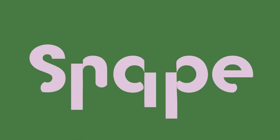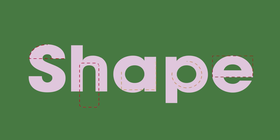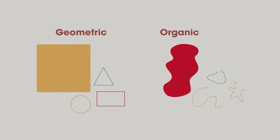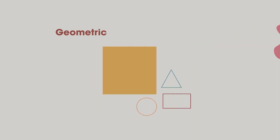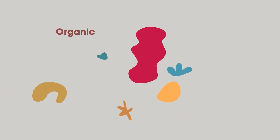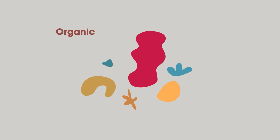Now, let's look at shape and its connection to line. Shapes are two-dimensional structures enclosed by lines. They have height and width. They can be geometric or organic. Geometric shapes like squares and triangles are mathematically regular — they are constructed using lines, angles and points. Organic or biomorphic shapes are irregular structures that occur in the natural world.